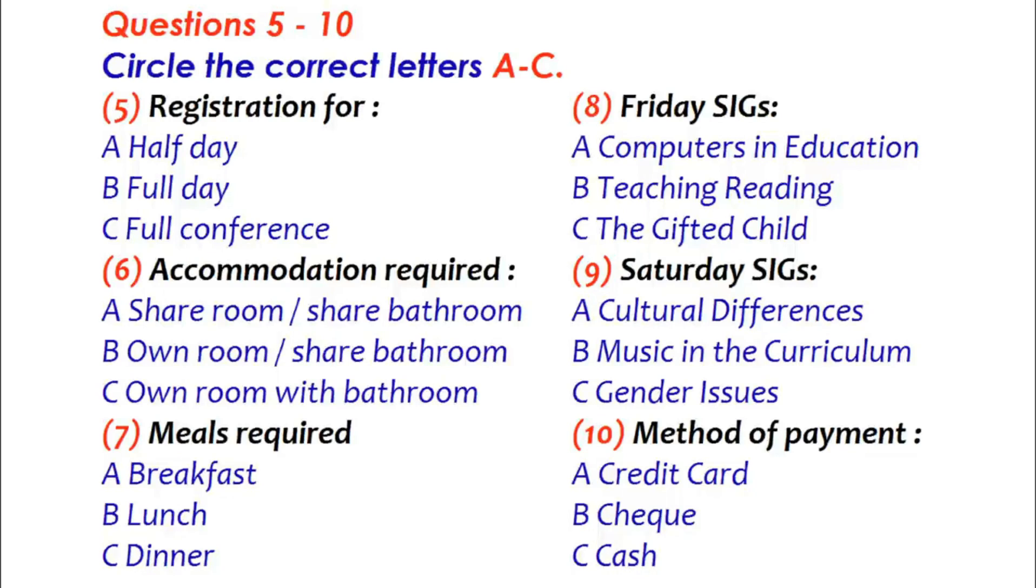Now, a couple of other things. There are a number of special interest groups organised. They're known as SIGs, and you're asked to nominate your preference. They'll take place on the Friday afternoon and Saturday morning, but they're filling up quickly, which is why you need to nominate now. Right. What are the SIGs? Well, there are six altogether. Let's see. On Friday, you'll have a choice between computers in education or teaching reading skills. Hmm. Or a session on catering for the gifted child. Oh, they all sound interesting. But technology in the classroom is really my area of interest, rather than reading. So I'll go for that. I can probably read up on the gifted child topic myself.